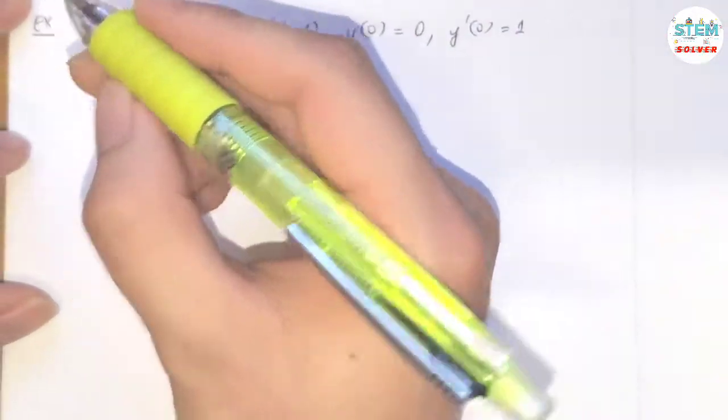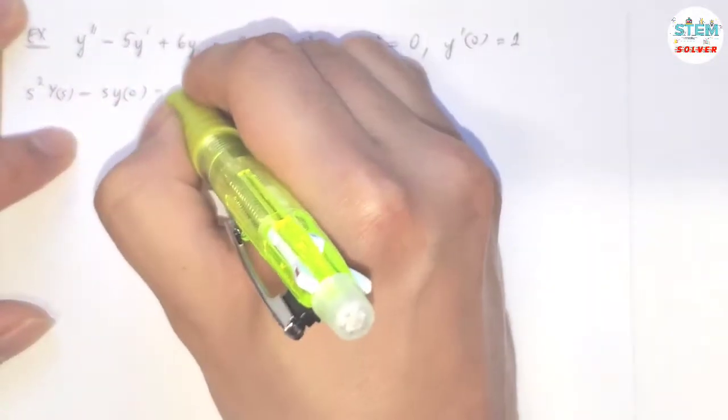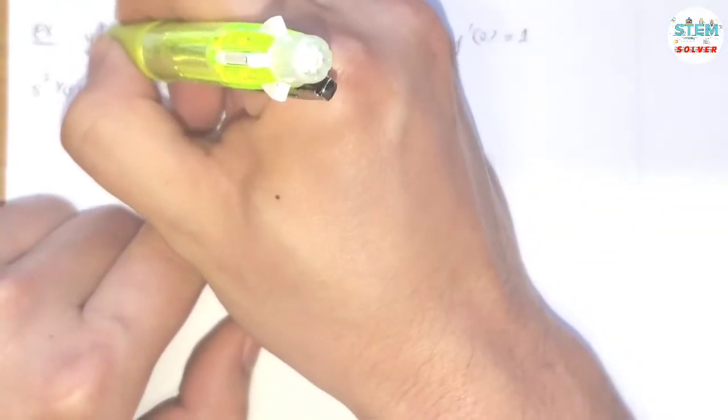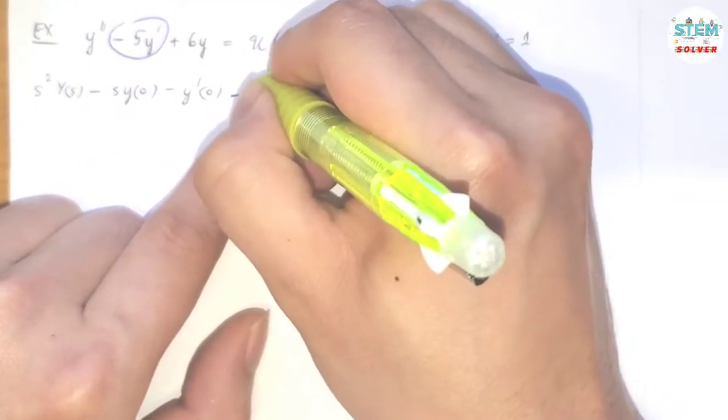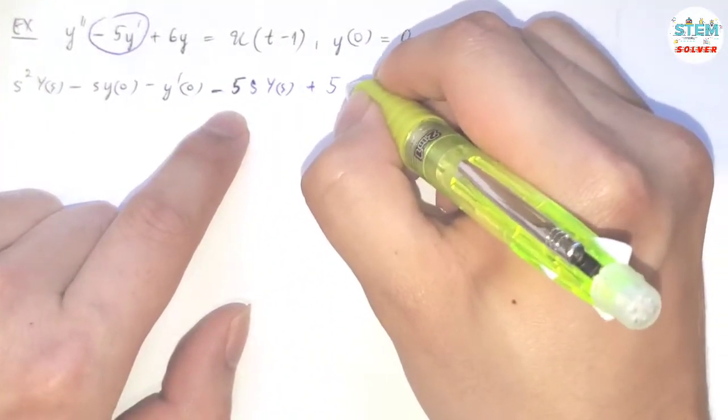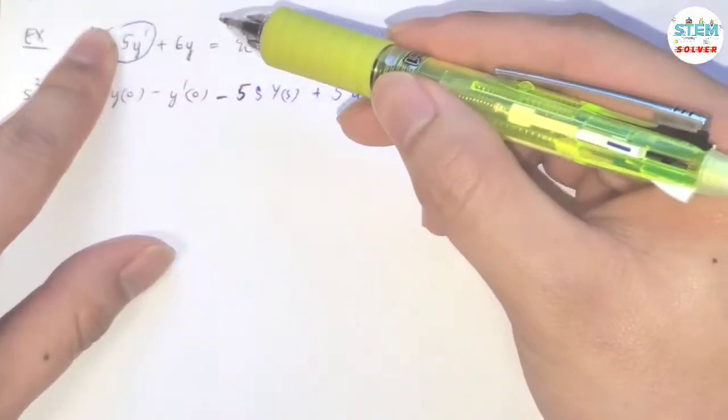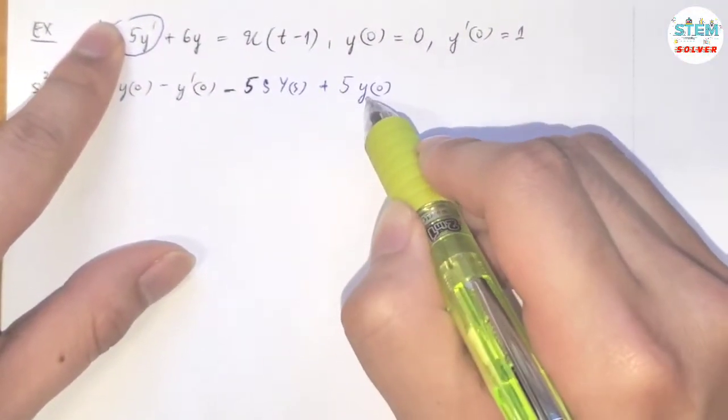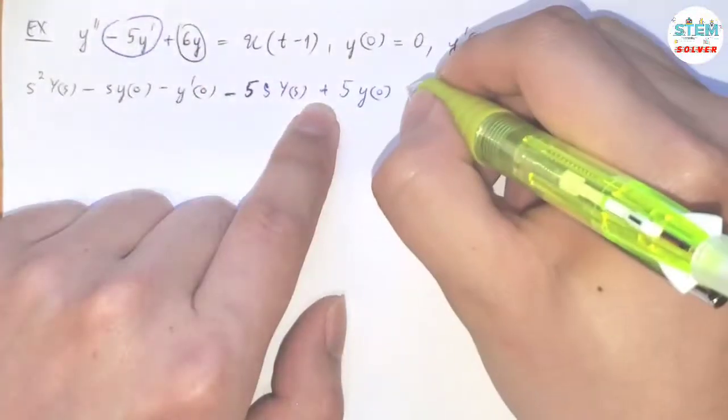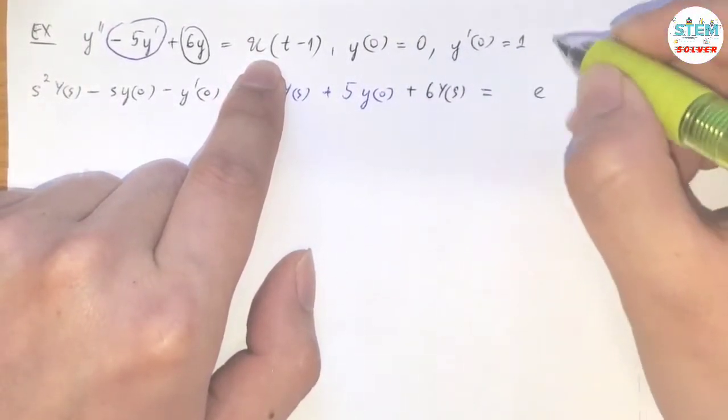So we are going to use the derivative theorem. Using that theorem, I have s²Y(s) minus sy(0) minus y'(0) minus 5 times sY(s) plus 5y(0), and then plus 6Y(s), and on this side it's just e to the negative s, isn't it?